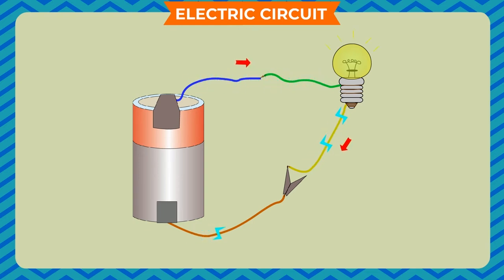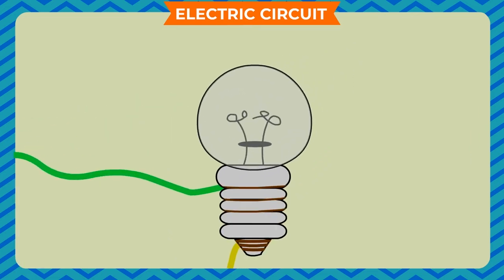The electric current flows from the positive terminal of the cell to the negative terminal of the cell through wires. Sometimes you see that the bulb does not light up even after the circuit is complete. This may be due to the fused bulb. That means the filament of the bulb is fused, broken off, and the circuit is broken off, so current does not flow through the bulb and the bulb does not light up.